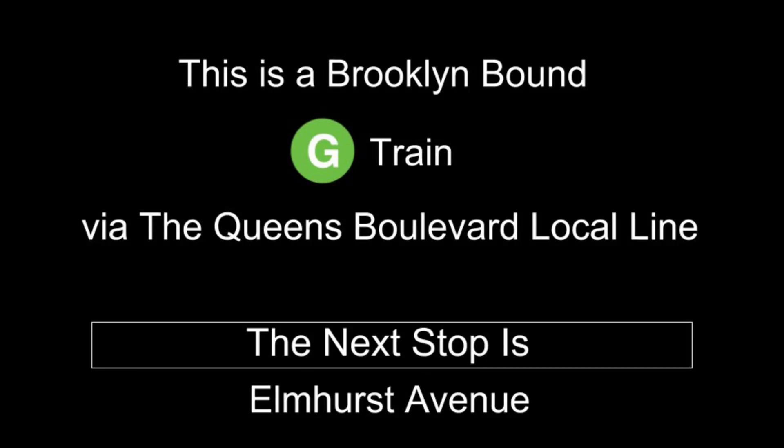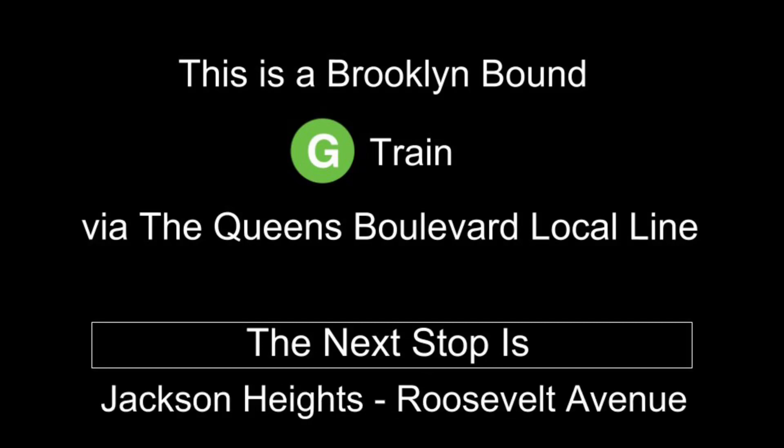This is a Brooklyn-bound G-Train via the Queens Boulevard local line. The next stop is Elmhurst Avenue. This is a Brooklyn-bound G-Train via the Queens Boulevard local line. The next stop is Jackson Heights, Roosevelt Avenue.